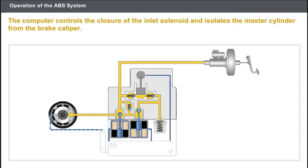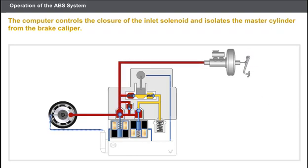Now let's look at the maintained pressure phase. The pressure in the circuit increases. In this case, wheel slip has a tendency to exceed the 20% threshold. The computer controls the closure of the inlet solenoid and isolates the master cylinder from the brake caliper. An increase in the braking pressure for this wheel becomes impossible.